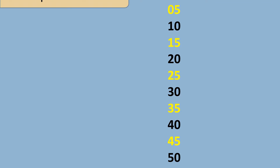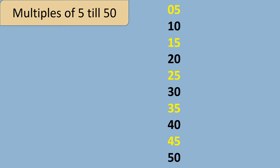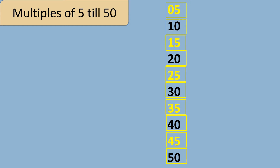Let's revise the multiples of 5 till 50: 5, 10, 15, 20, 25, 30, 35, 40, 45, 50. Can you see the pattern? Some of the numbers have 5 at the end and some have 0.